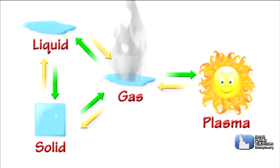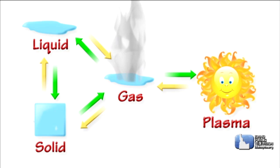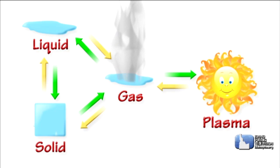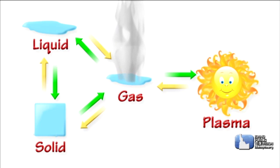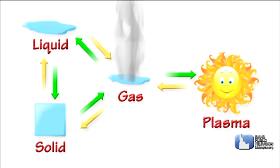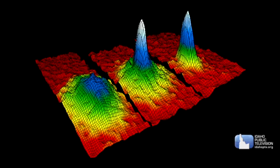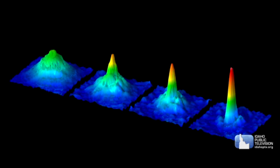Matter comes in four basic states or phases: a solid, a liquid, a gas, or plasma. There are other forms of matter — for example, one called Bose-Einstein condensates. But these exotic forms of matter exist only in laboratories and aren't found naturally on Earth.